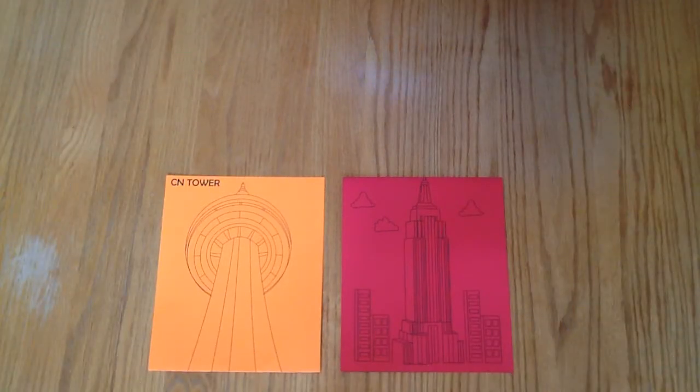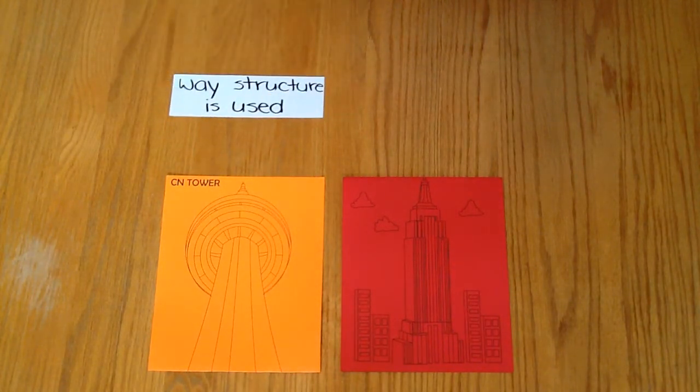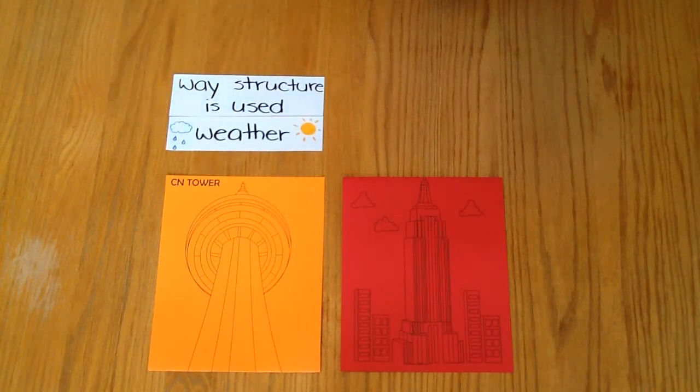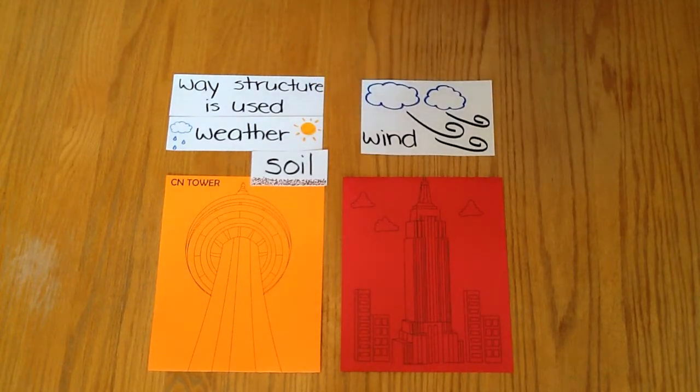Have you ever wondered why skyscrapers don't fall over? Why some buildings are made of wood while others are made of steel or glass? Have you ever looked at the CN Tower in Toronto and wondered how its unique shape and design stands so tall? Architects and engineers plan and design different types of buildings or structures that we see around us. They have to consider many factors when designing and building such as the way the structure will be used, weather, and even the type of soil it will be built on. They have to make sure that the building or structure can withstand forces such as strong winds. It is also very important that the shape of the structure is designed properly because this will affect how strong the structure will be.